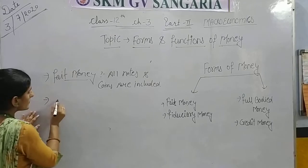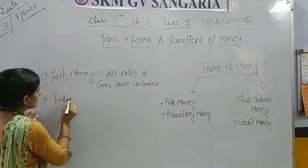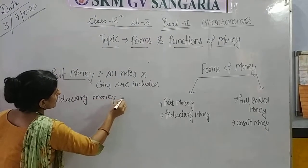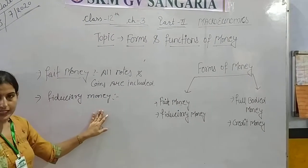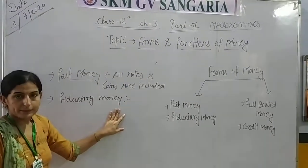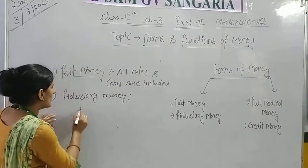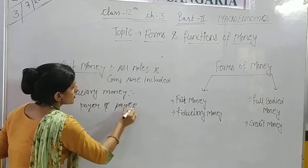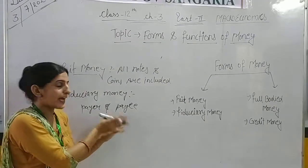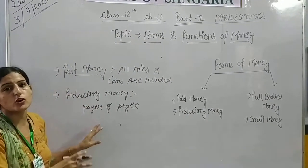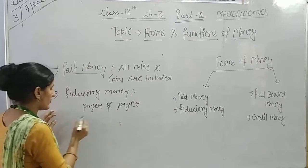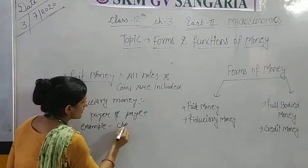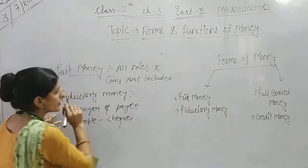The second is fiduciary money. Fiduciary money is the medium of exchange in which there is a trust between the payer and the payee — the person who pays trusts the other. For example, a cheque is fiduciary money.